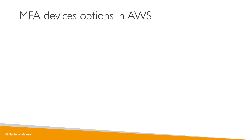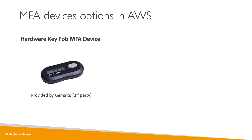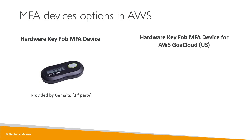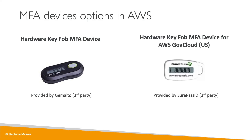Then you have other options. You have a hardware key fob MFA device — for example, this one provided by Gemalto, which is also a third party to AWS. And finally, if you are using the US government cloud, the AWS GovCloud, then you have a special key fob provided by SurePassID, which is also a third party.